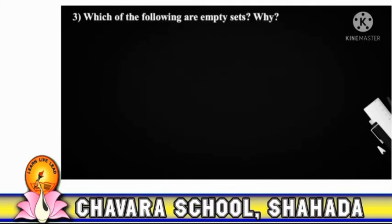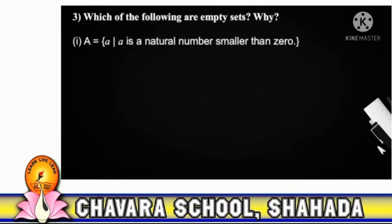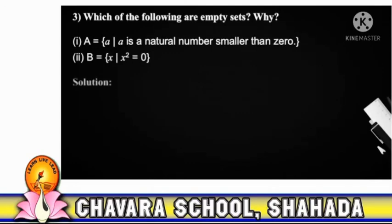Question 3: Which of the following are empty sets? Why? 1. A is the set of a such that a is a natural number smaller than 0. 2. B is the set of x such that x² = 0.